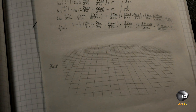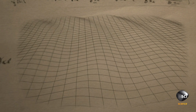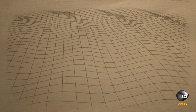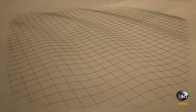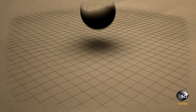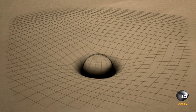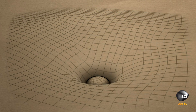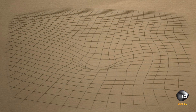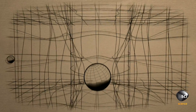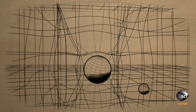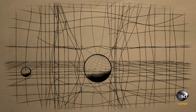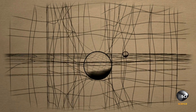According to Einstein, space isn't simply a void. It's more like a four-dimensional fabric woven from both space and time. The mass of planets can warp and distort the fabric, gathering other celestial objects like moons around them. And it's this bending of space-time that creates the effect we experience as gravity.